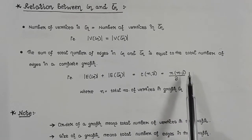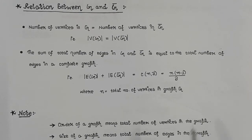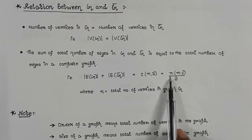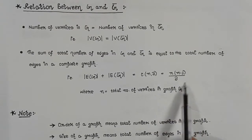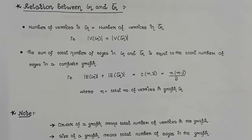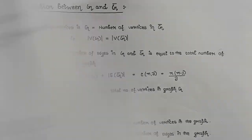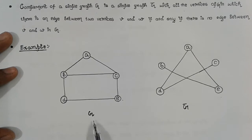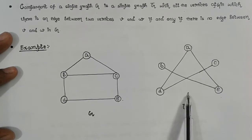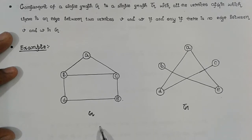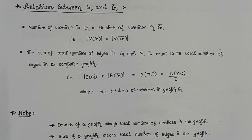You can simply substitute the value of N, the number of vertices, into the formula N(N-1)/2, and it will return the total number of edges present in the complete graph. For example, we have seen this with our graph G and its complement G-bar. If we sum up the edges in both graphs, the total equals the edges in the complete graph. This is the main relation in the complement of a graph topic.